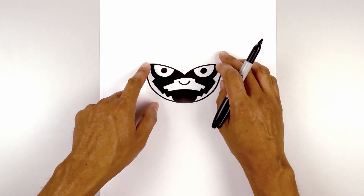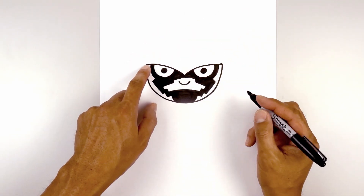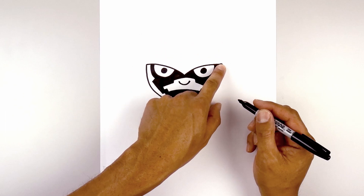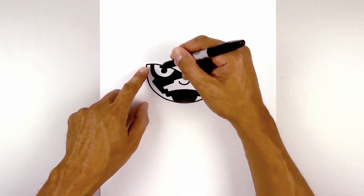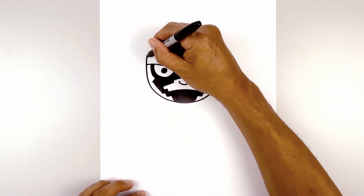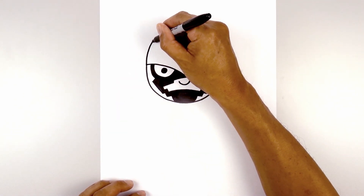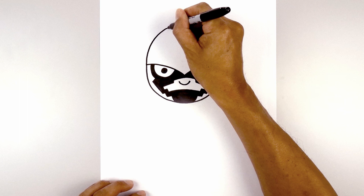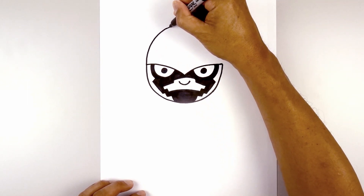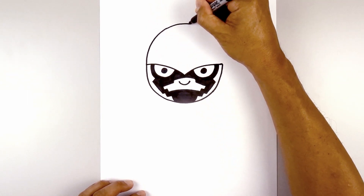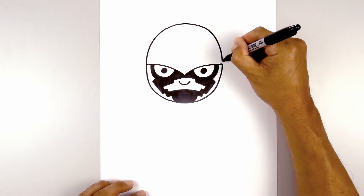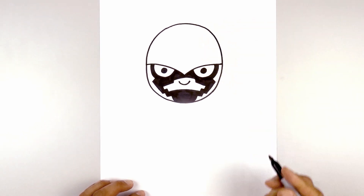Now we're going to move up and draw on the top of the head. Starting from the left side, we're going to draw another half circle going over towards the right. We'll start out here, curve up and in towards the center, round out the top of the head, and then bring that down on the right side.